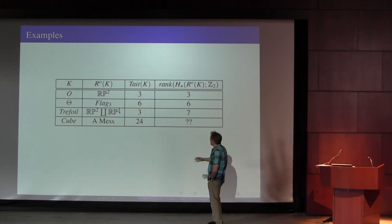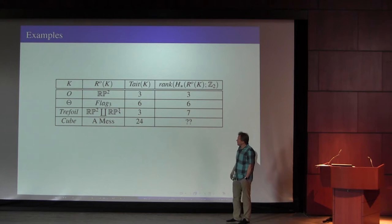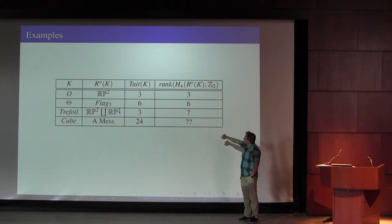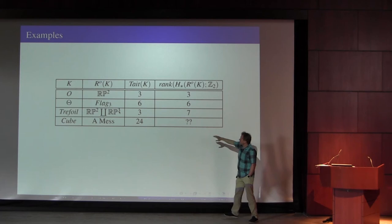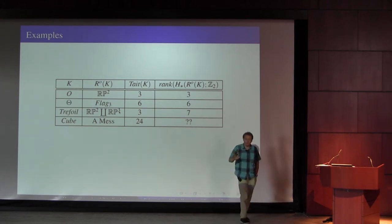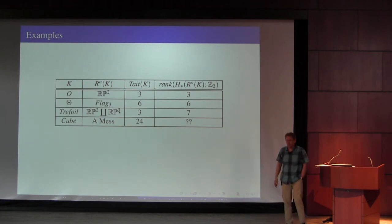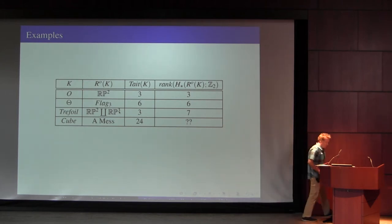It's easy to compute the number of Tate colorings. The rank of the homology isn't the right thing to look at because the representation variety is singular, but when you compute the rank of the instanton homology for the cube it turns out to be 24. That's a little bit better evidence that the conjecture has some meat to it.